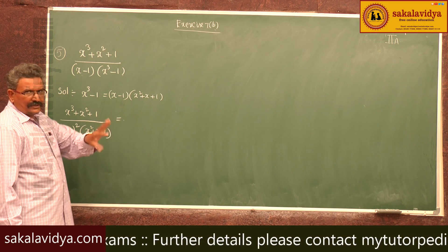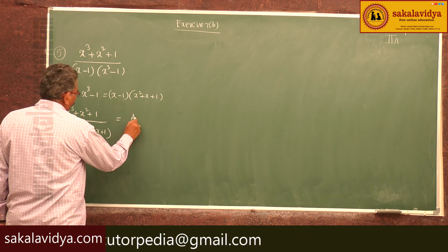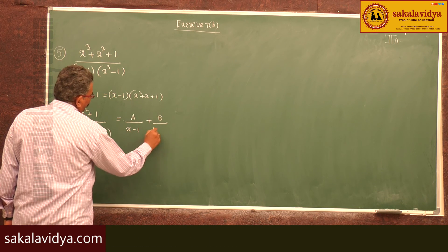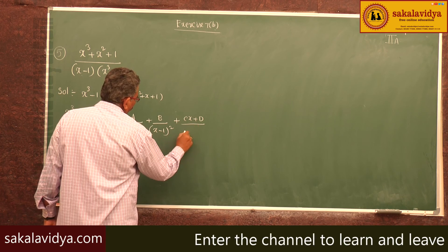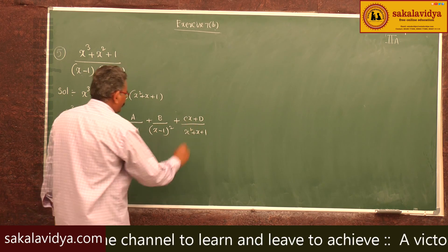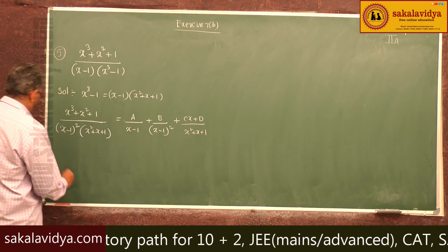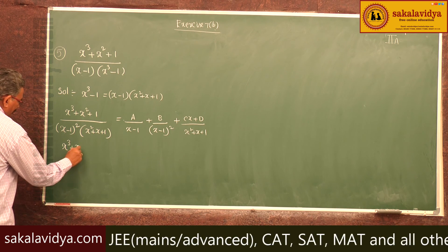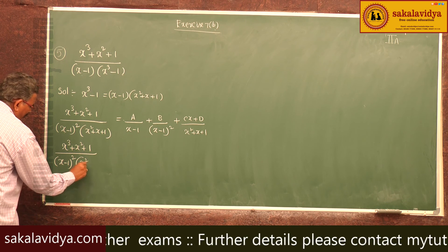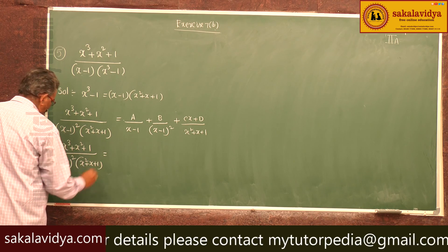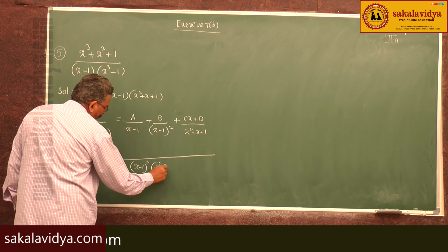This involves rule number 3 as well as rule number 4. So we write: (x³ + x² + 1) / [(x-1)²(x² + x + 1)] = A/(x-1) + B/(x-1)² + (Cx + D)/(x² + x + 1). In this case we have to find the values A, B, C, and D.